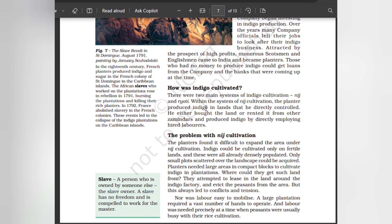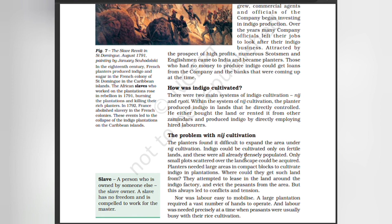How was indigo cultivated? There were two main systems of indigo cultivation: nij and ryoti. Within the nij system, the planter produced indigo in lands that he directly controlled — he either bought the land or rented it from zamindars and produced indigo by directly employing hired laborers. The problem with nij cultivation was that planters found it difficult to expand the area under cultivation. Indigo could be cultivated only on fertile lands, and these were already densely populated. Only small scattered plots could be acquired, whereas plantations needed large areas in compact blocks.